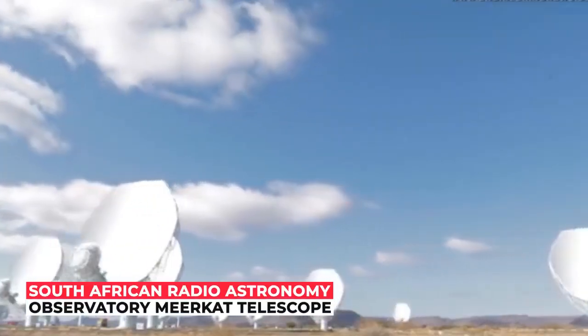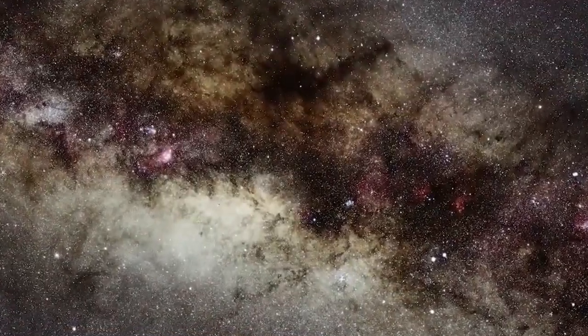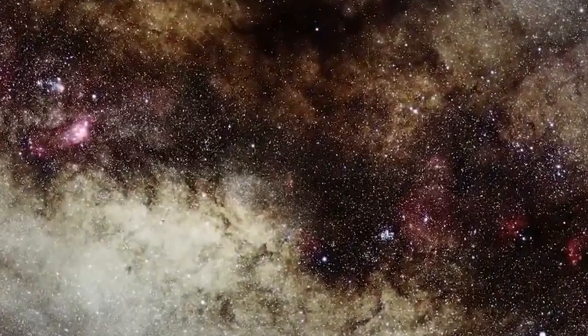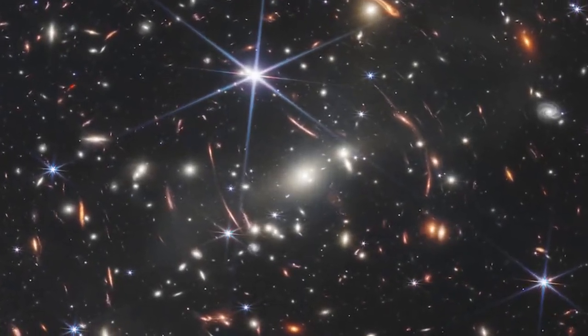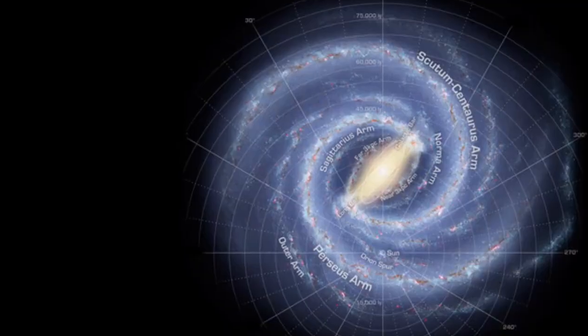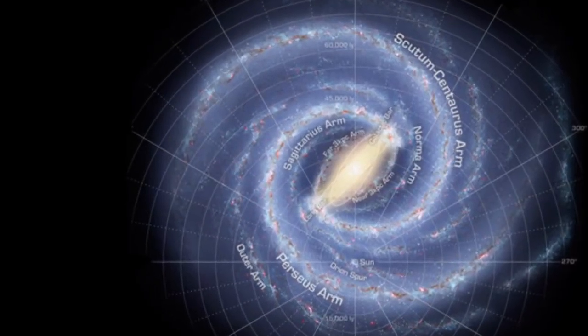Using the South African Radio Astronomy Observatory MeerKAT Telescope, astronomers could find 10 times more strands than Yusef-Zadeh's previous discovery. The new detailed image is a mosaic of 20 observations taken over three years while looking toward the distant center of the Milky Way, which is 25,000 light-years from the Earth.